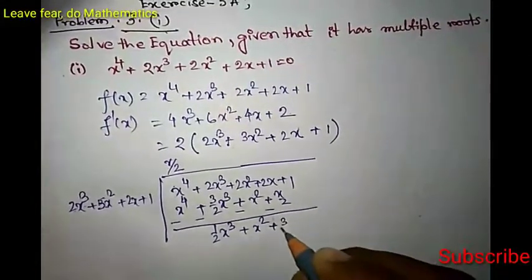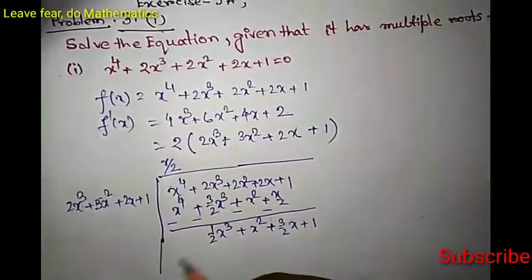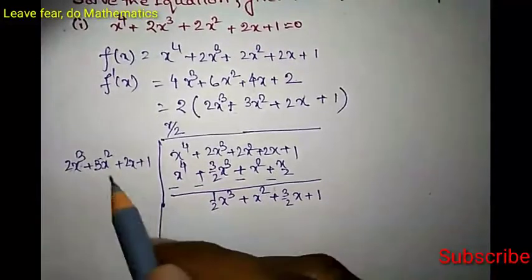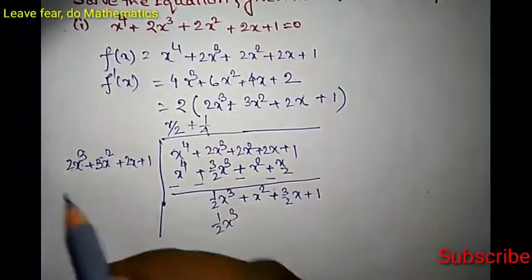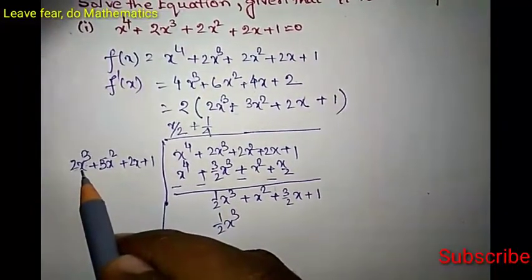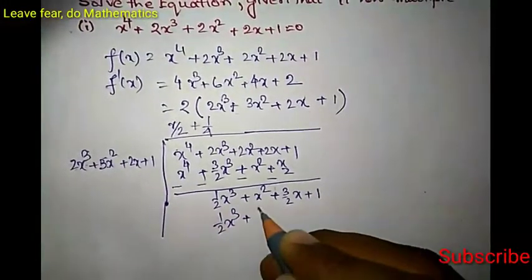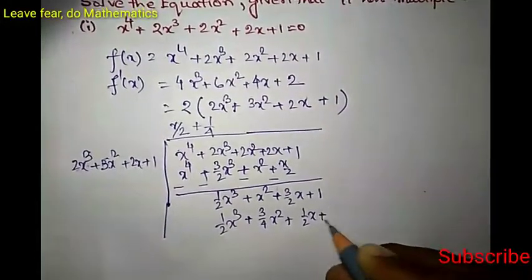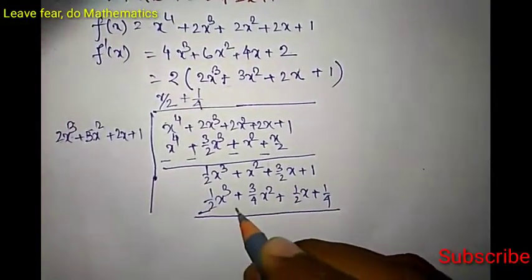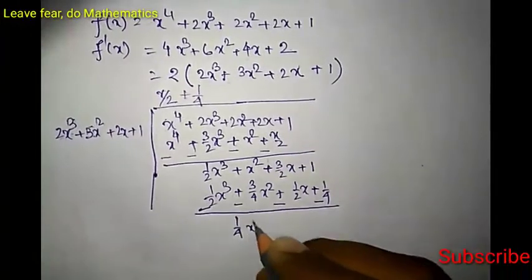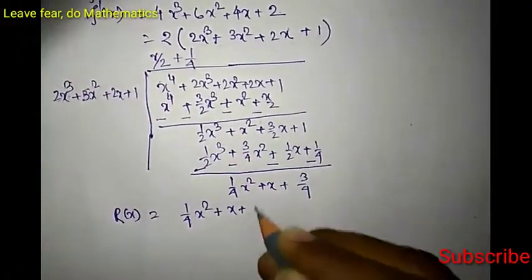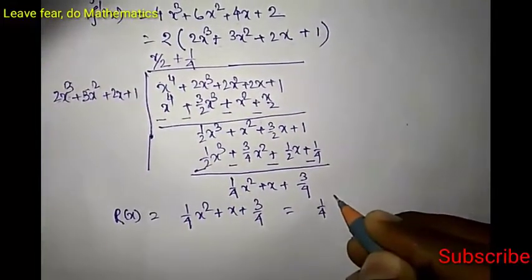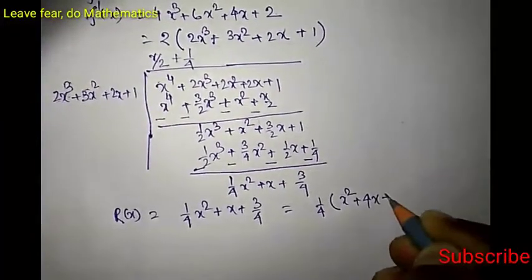Now we need to multiply so that we get (1/2)x³, so multiply by 1/4. This gives x³/2, then (3/4)x², then (1/2)x + 1/4. After subtracting again, the remainder is (1/4)x² + x + 3/4. We can factor out 1/4 to write this as (1/4)(x² + 4x + 3).